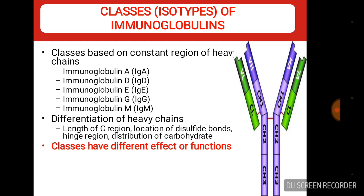In antibodies, two types of chains are present: first is light chain and second is heavy chain. Heavy chains of each immunoglobulin class are designated by a small Greek letter corresponding to the class. That is gamma heavy chain in IgG, mu heavy chain in IgM, alpha in IgA, delta in IgD, and epsilon in IgE.